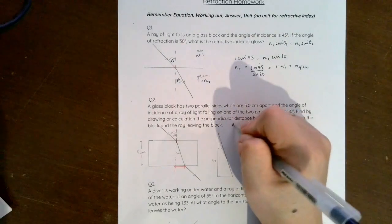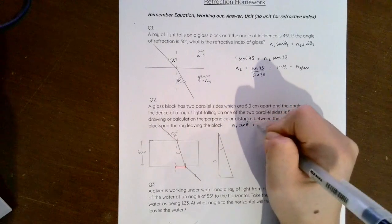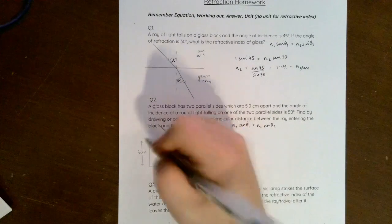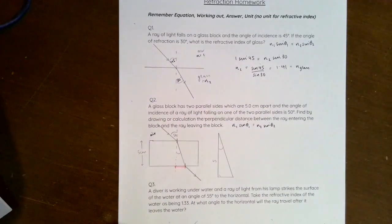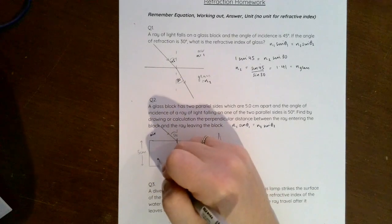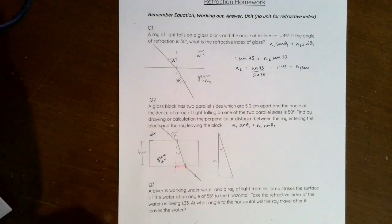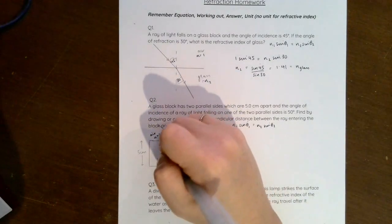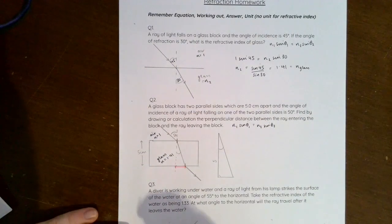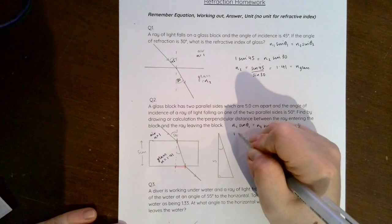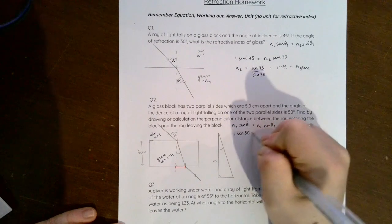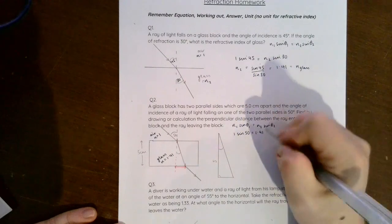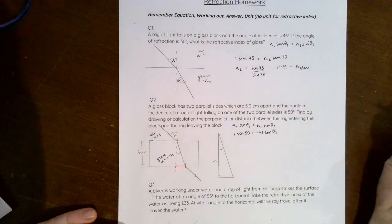We're going to use the same equation as in question one: n₁ sin θ₁ equals n₂ sin θ₂. And before it enters the glass it would have been in air. Here's the glass. We worked out here from question one that that n is 1.41 and this n is 1. So what we know now is that 1 for n₁ sin 50 must equal 1.41 from the previous question sin θ₂.